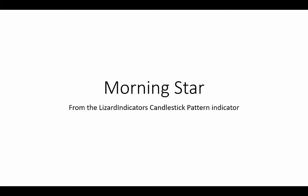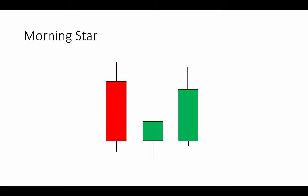Hi there. In this video we're looking at the Morning Star pattern as defined by our candlestick pattern indicator for NinjaTrader. You'll find that in our premium section over at lizardindicators.com. This is a three-bar pattern that will form during a downtrend indicating possible reversal in the price action. Following this constellation, traders are looking for an up climb and will often seek confirmation using additional indicators before trading this setup.